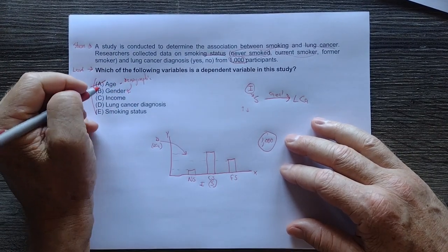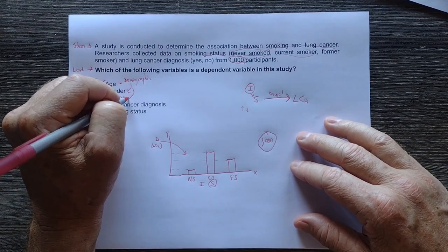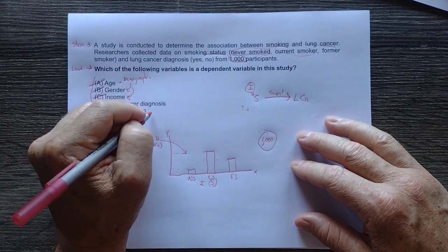Gender is also a demographic variable. It's not in the causal pathway, so it is not independent or dependent. Income is also a demographic, so that one's out. We are left here with lung cancer and smoking. We said smoking was independent, so that one is out. Lung cancer diagnosis is the dependent variable in this case.